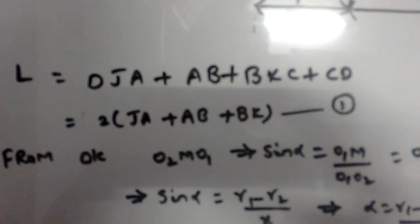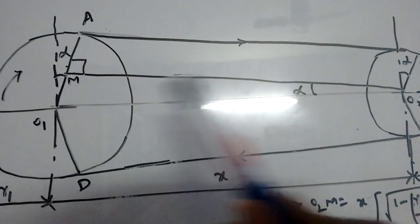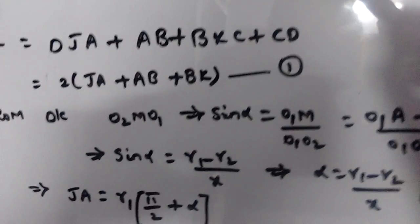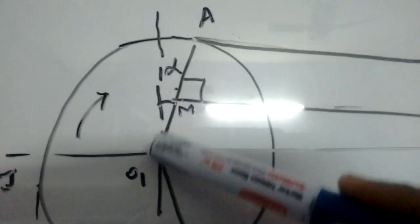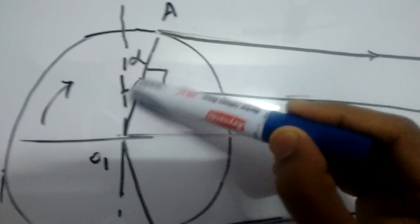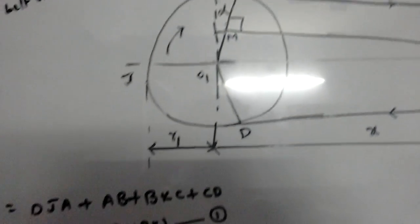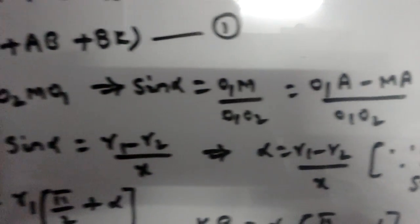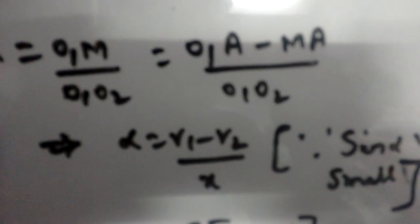From triangle O2MO1, sin alpha equals O1M divided by O1O2. Now O1M equals O1A minus MA, which equals R1 minus R2, because MA is parallel to O2C. Therefore sin alpha equals (R1 minus R2) divided by O1O2 equals (R1 minus R2) divided by X. Since alpha is very small, we can write alpha equals (R1 minus R2) divided by X.